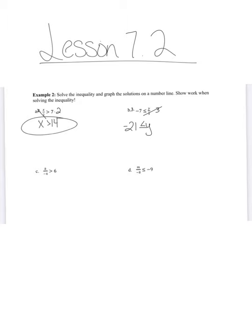And we could rewrite this, if you would like, to have the variable on the left side. And then we reverse the inequality sign to greater than or equal to. So negative 21 is less than or equal to y is the same as saying y is greater than or equal to negative 21.